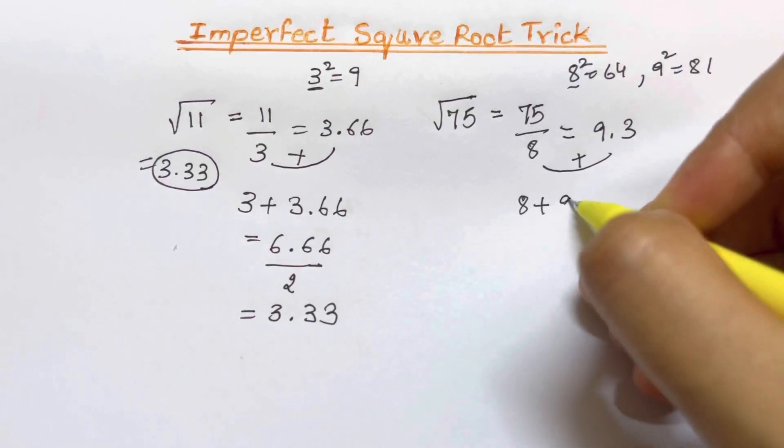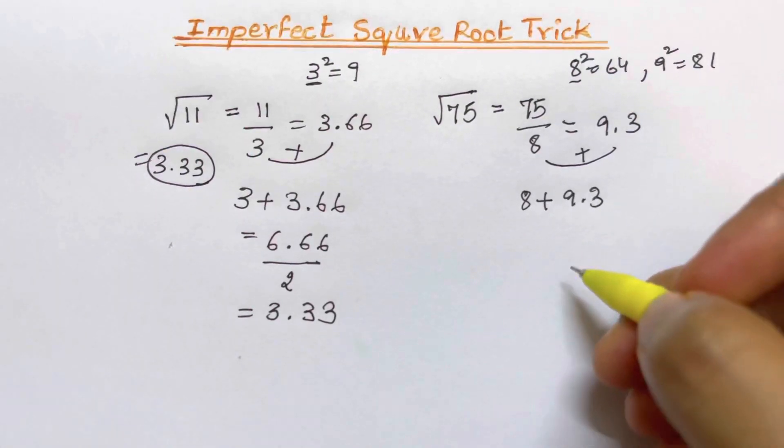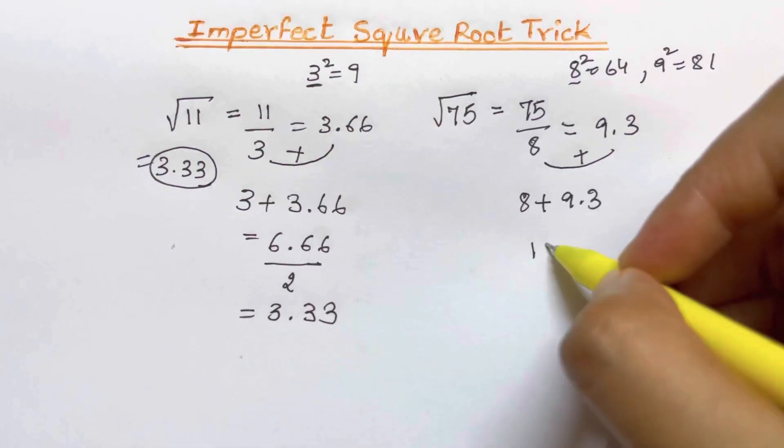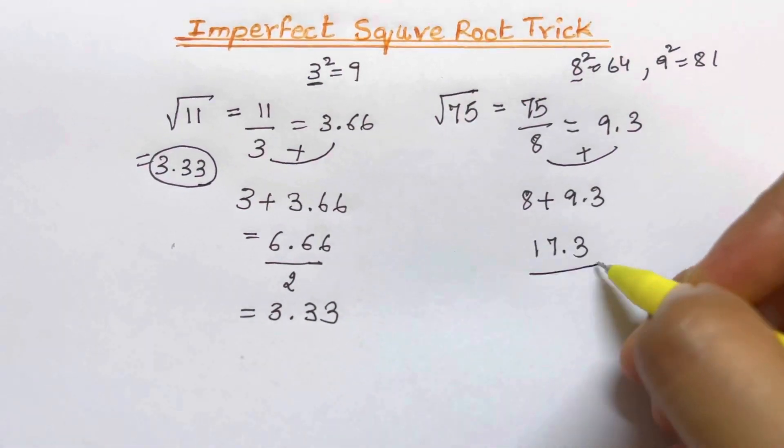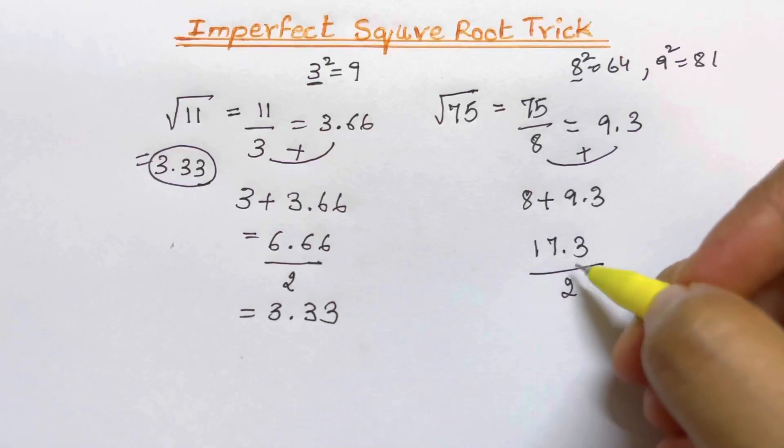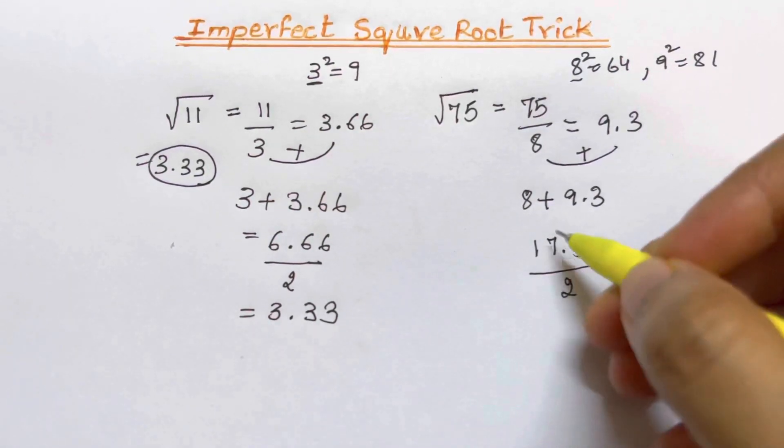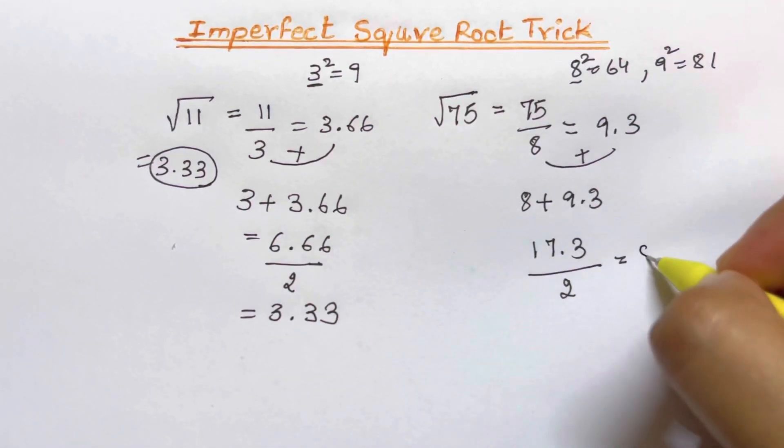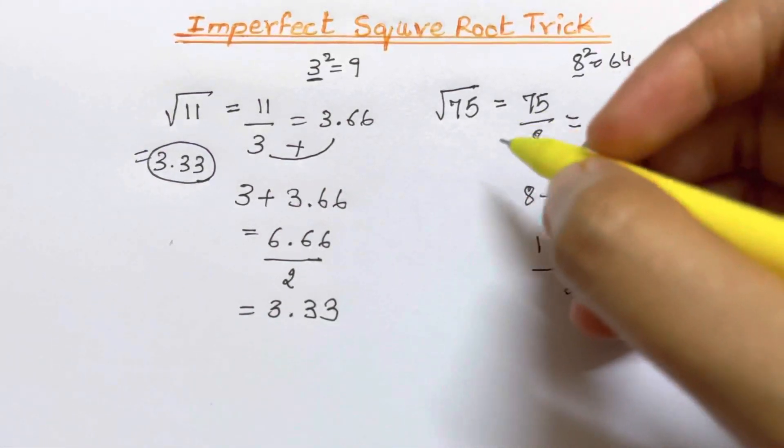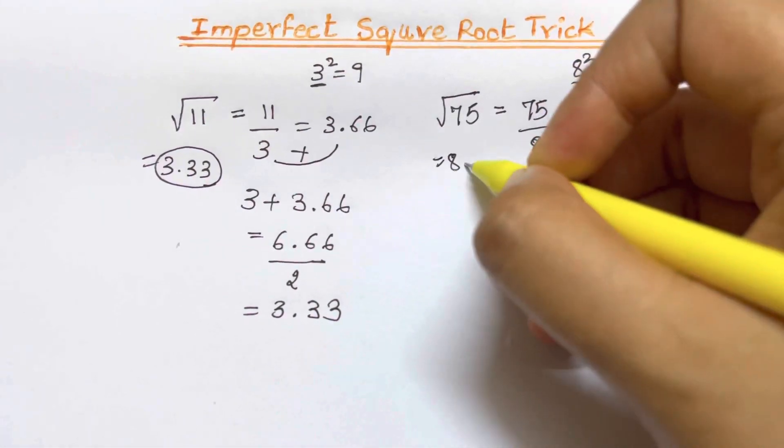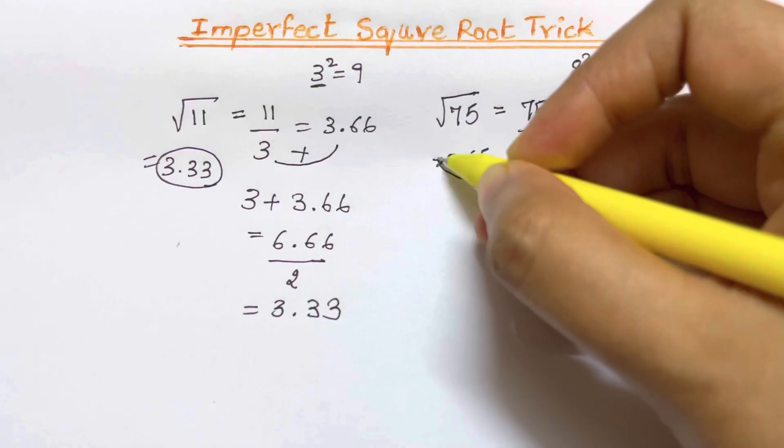8 plus 9.3 will give us 17.3 and the third and last step is to divide it by 2. 17.3 divided by 2 will give you 2 times 8 is 16, 2 times 6 is 12 and 2 times 5 is 10. So your answer is 8.65 approximately.